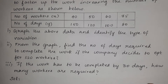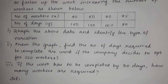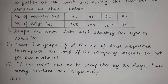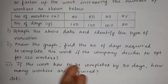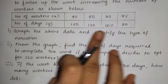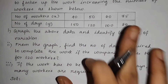Let's take the solution. First, we have a graph of a variation problem. We have to compare the data to identify what type of variation — direct variation or indirect variation.